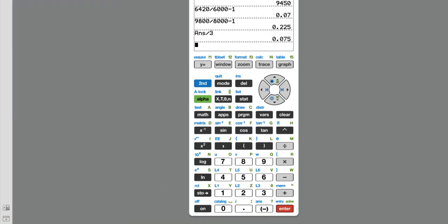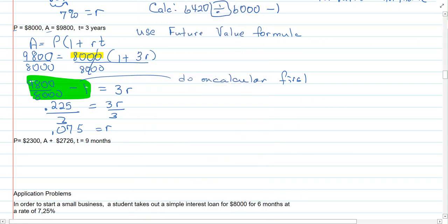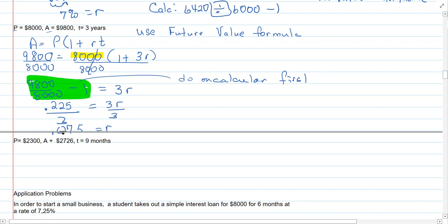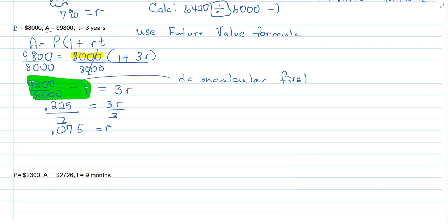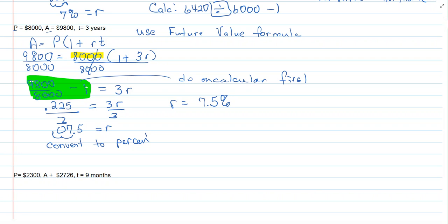On the calculator: 9,800 divided by 8,000 minus one, then divide by three — and we get seventy-five thousandths, which is 0.075. Converting to percent by moving the decimal two places to the right, R equals seven and a half percent. That's the answer. I've been talking for 24 minutes so I'll stop here and continue in just a minute.